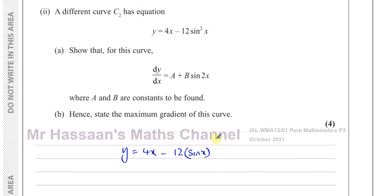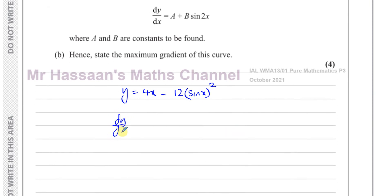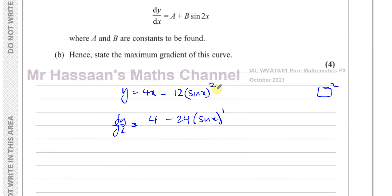Sine squared x is the same as writing (sine x) all squared. So dy/dx — the first part gives 4. For the second part, multiply by the power since the main function is something squared: minus 24. This leaves sine x to the power 1. Using the chain rule, multiply by the differential of what's inside, which is cosine x. So dy/dx equals 4 minus 24 sine x cosine x.